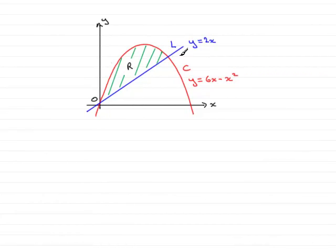Now what I've done is just copy the diagram that we're given. We have the line L, which is equation y equals 2x, and the curve C, which has equation y equals 6x minus x squared.